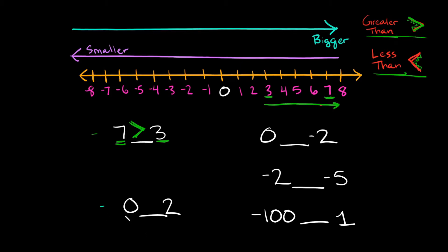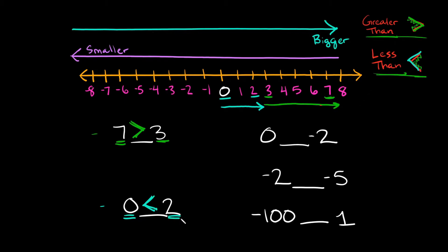This next one, we're going to compare 0 and 2. Let's locate those on the number line: I have 0 here and 2 here. Which one is bigger? 2 is bigger because it's further to the right on the number line. I want to eat the bigger number, so I'm going to make my mouth face this way and I could draw little teeth on there to remind myself. You would read this answer as: 0 is less than 2.